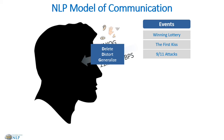Our internal filters also include our decisions, our meta-programs and personality types, our values and beliefs, and our attitudes. Those filters will then cause us to delete, generalize, and distort the information to take in our 134 bits out of that potential 11 million.